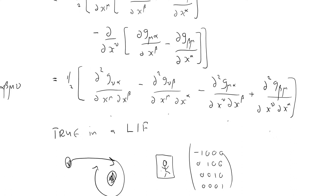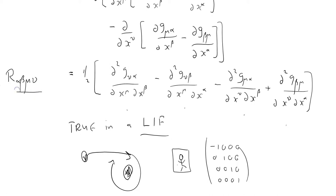General relativity, step by step. I've developed this equation here, which is true in a local inertial frame, in an elevator frame, for the Riemann-Christoffel tensor with four downstairs indices.